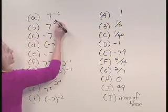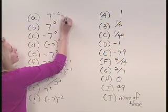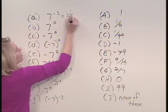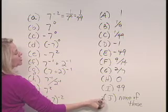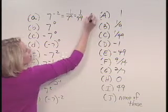Let's start with a. 7 raised to the negative 2 power is 1 over 7 squared, which is 1 over 49. Choosing from those answers in the second column, this would be c.